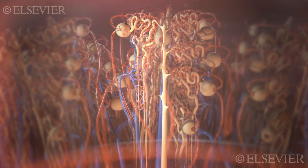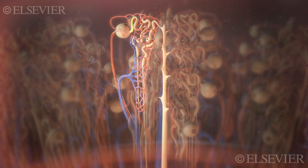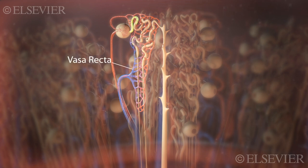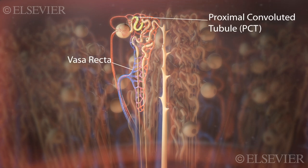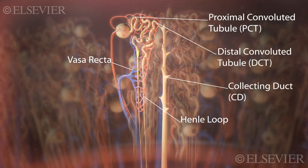More wastes and certain ions can move from the blood in the peritubular capillaries and vasa recta into the filtrate in the PCT, loop of Henle, DCT, and the collecting duct in a process called tubular secretion.